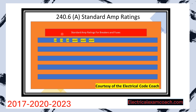Starting on the left-hand side is where it starts with our numbers — you should pull your codebook out and look at it now. If you're in the 2023 and later, it's going to start with 10 amps and go up. In the 2020 and previous, it's going to start with 15 amps and go up. And then it goes up by fives: 15, 20, 25, 30, 35, 40, 45, 50.